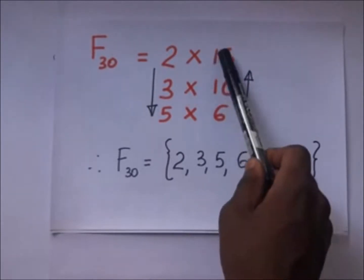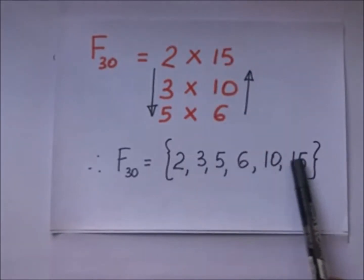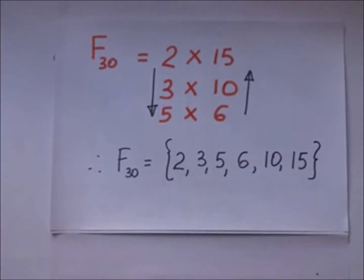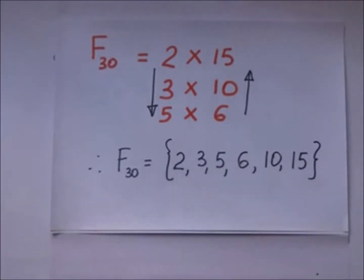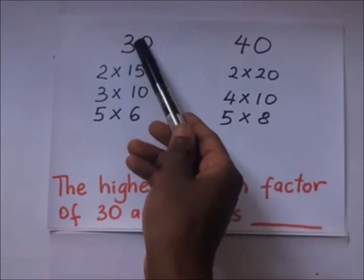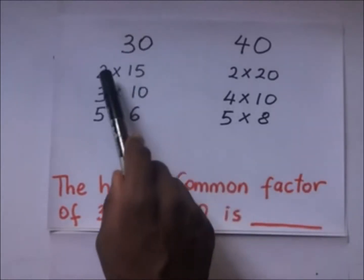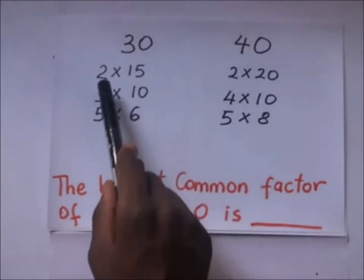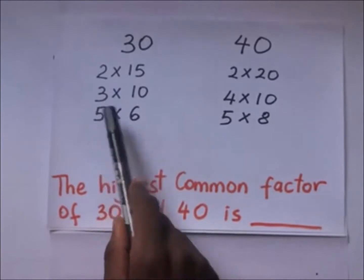So the factors of 30 are 2, 3, 5, 6, 10, and 15 as listed in that set. We are expected to have knowledge on how to get the highest common factor of any two numbers. For example, the factors of 30 include 2, 3, 5.